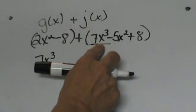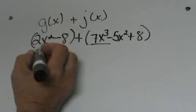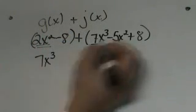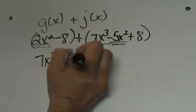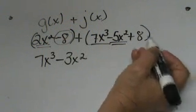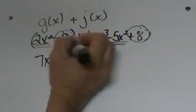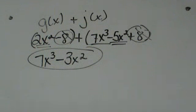We do not have another x cubed term to add to it, so we just bring that one down. Then we have 2x squared minus 5x squared, which is negative 3x squared. Then negative 8 and positive 8 just ends up being zero. So our final answer is 7x cubed minus 3x squared. That is how you add two functions together — you are just adding your like terms.